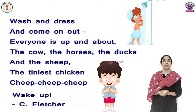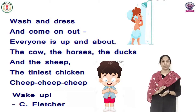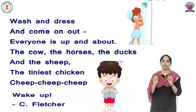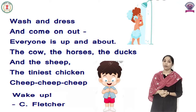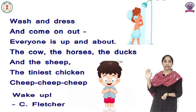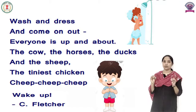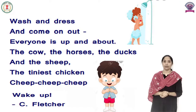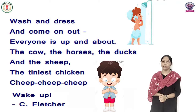Everyone is up and about. The cow, the horses, the ducks and the sheep, the tiniest chicken — chip, chip, chip. Poet कहता है कि नहाकर कपड़े पहन कर बाहर आओ और देखो — गाय, घोड़े, बतखें, भेड़ें और छोटे मुर्गी के चूजे भी चूँचूँ की आवाज करते हुए सब बाहर आ चुके हैं। तो wake up — तुम भी जाग जाओ। ठीक है बच्चो?